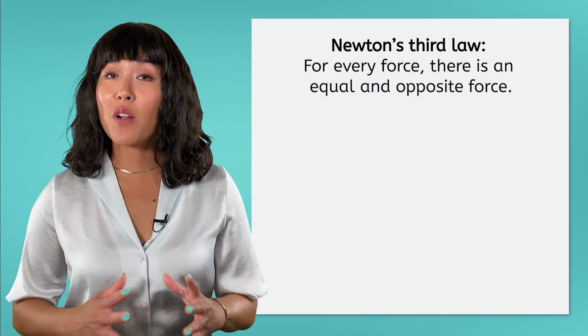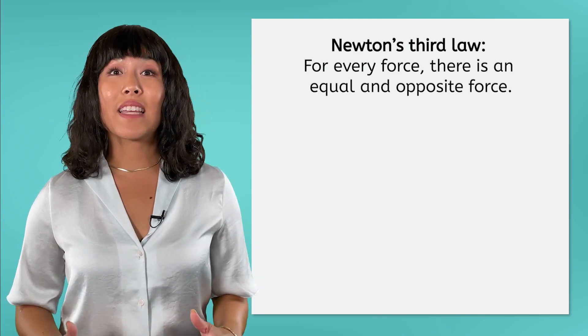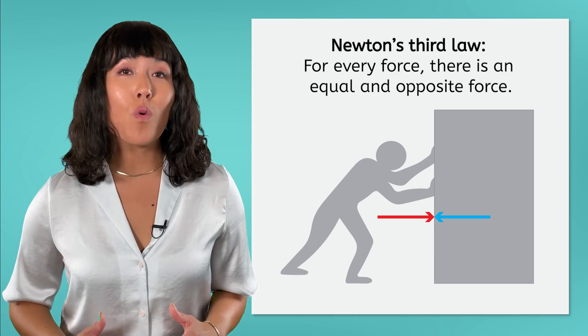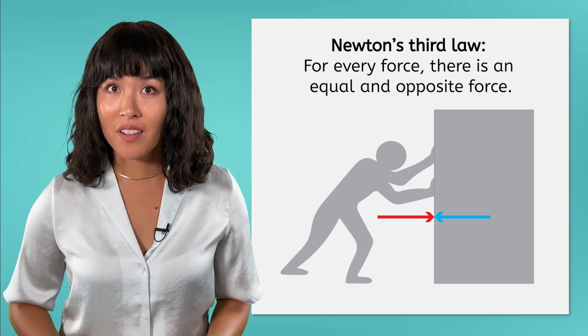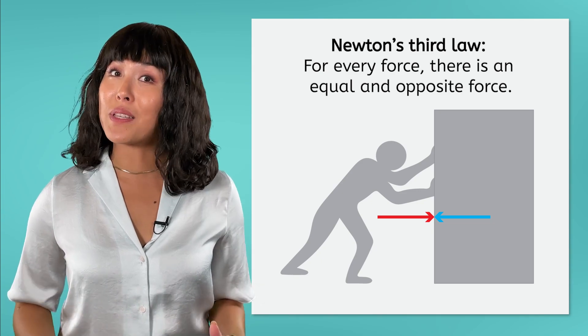Just like Newton's first two laws, his third law deals with the idea of forces and how they affect the motion of an object. It states that for every force, there is an equal and opposite force. Or we could say that two touching objects will apply a force to each other, and those forces will be equal in magnitude, but have opposite directions.